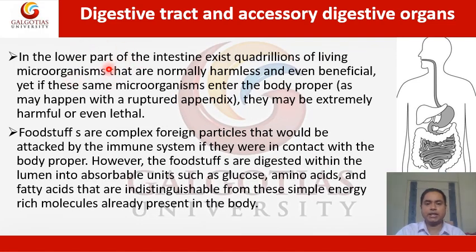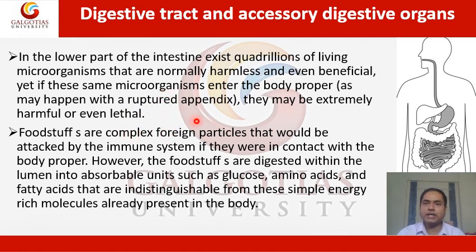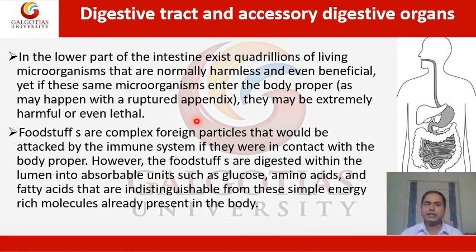Another process tolerated only in the digestive system is the presence of gut microbiota. The lower part of the intestine harbors quadrillions of living microorganisms that are normally harmless and even beneficial. However, if these microorganisms enter the body — for example, during rupture of the appendix — they may be extremely harmful or even lethal. Foodstuffs are complex foreign particles that would be attacked by the immune system if in contact with the body, but they are digested within the lumen into absorbable units such as glucose, amino acids, and fatty acids that are indistinguishable from simple energy-rich molecules already present in the body.